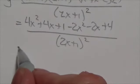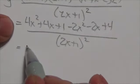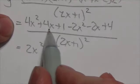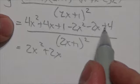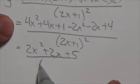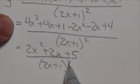And let's keep going here. This is going to be 2x squared plus 4x minus 2x, so plus 2x plus 1 plus 4 plus 5 all over 2x plus 1 squared.